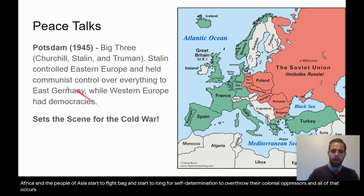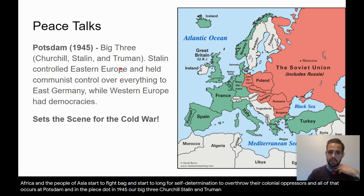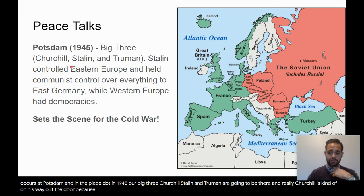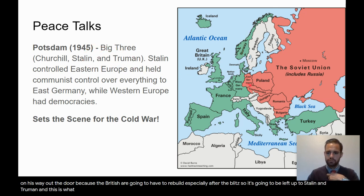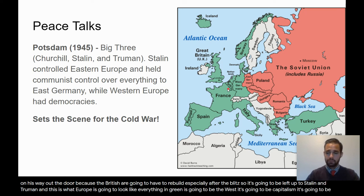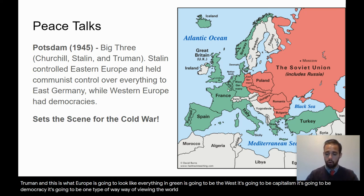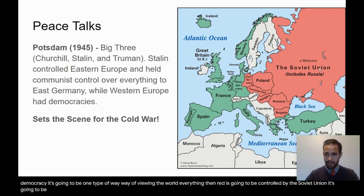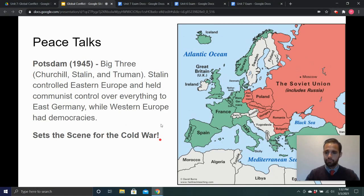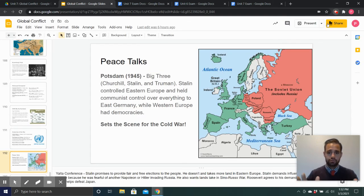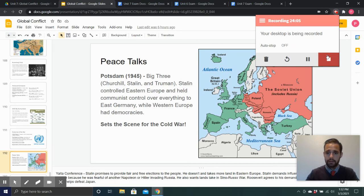All of that culminates at Potsdam in the peace talks in 1945. Our big three — Churchill, Stalin, and Truman — are there, though Churchill is kind of on his way out as the British have to rebuild after the Blitz, leaving it up to Stalin and Truman. This is what Europe looks like: everything in green is the West — capitalism and democracy; everything in red is controlled by the Soviet Union — communism and an entirely different way of viewing the world. Ladies and gentlemen, that is what the Cold War is all about, and we'll discuss that more in the upcoming weeks with Unit 8. Thank you for traveling with me through Unit 7.